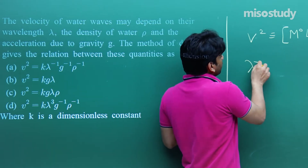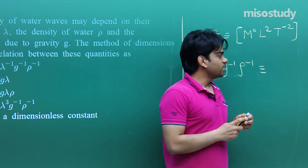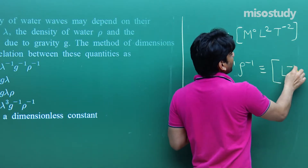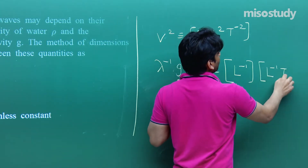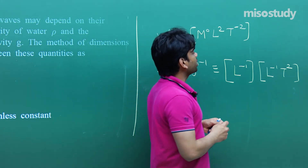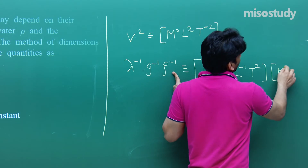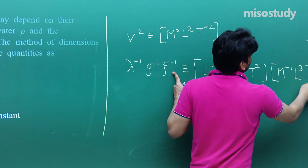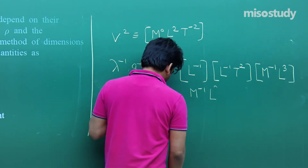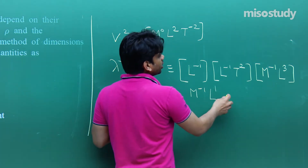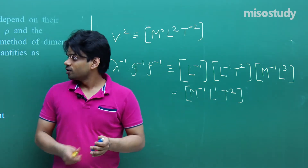Let's check option A: k·λ⁻¹·g⁻¹·ρ⁻¹. Dimension of λ⁻¹ is L⁻¹. Dimension of g⁻¹ is (LT⁻²)⁻¹ = L⁻¹T². Dimension of ρ⁻¹ is (ML⁻³)⁻¹ = M⁻¹L³. Multiplying: M⁻¹ · L⁻¹·L⁻¹·L³ · T² = M⁻¹L¹T². This does not match M⁰L²T⁻², so option A is incorrect.